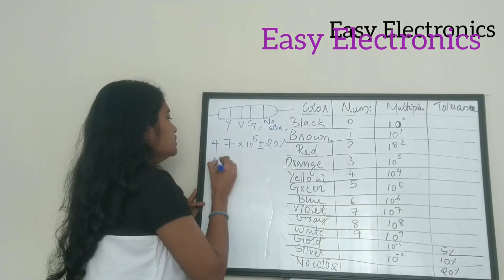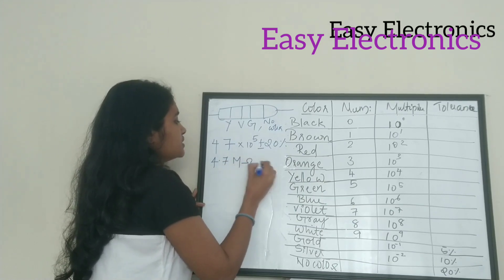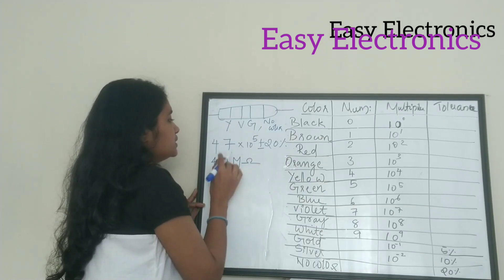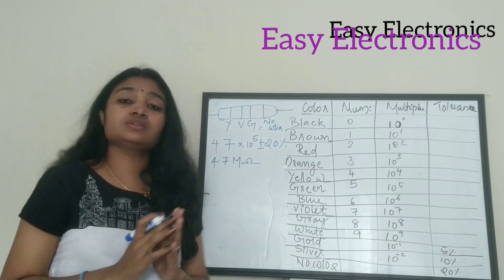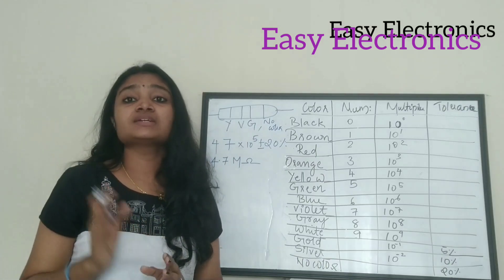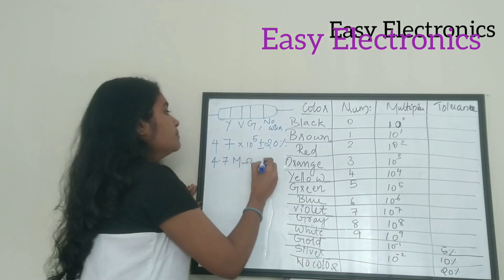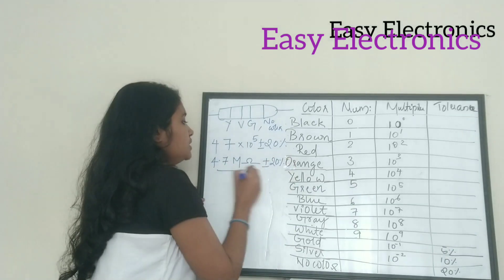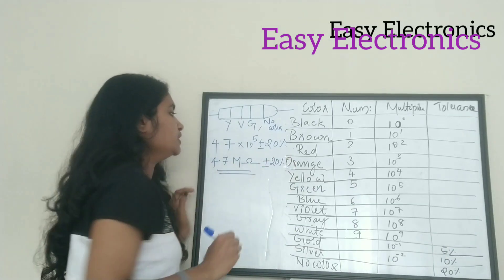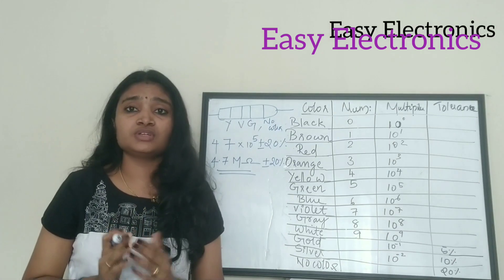That is 47 × 10⁵, which equals 4.7 × 10⁶ = 4.7 mega-ohm ±20%. This is the resistance value.